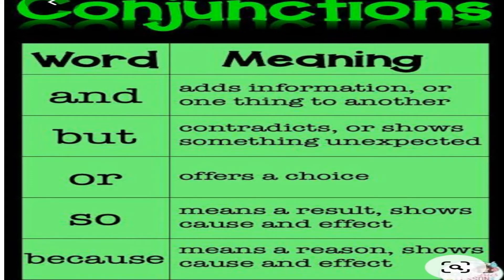Now, 'and' — 'and' is used for connecting or adding more information, adding one thing to the other. Like I said: tea and coffee, juice and sandwiches, Tom and Jerry. These kinds of examples show how 'and' adds things together.